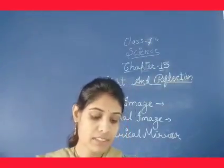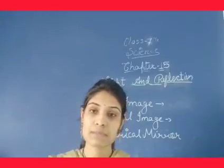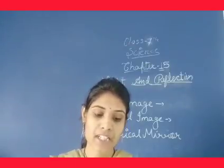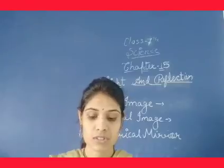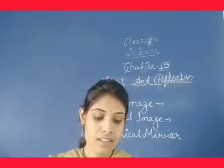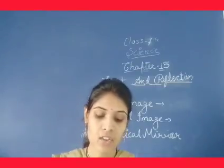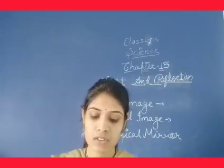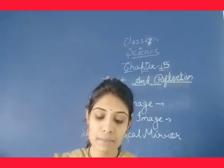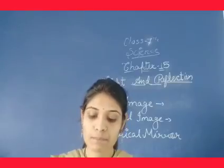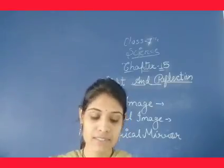First, in our concave mirror diagram, this point is called the center of curvature. The geometrical center of the mirror surface is called the pole, and it is denoted by P.